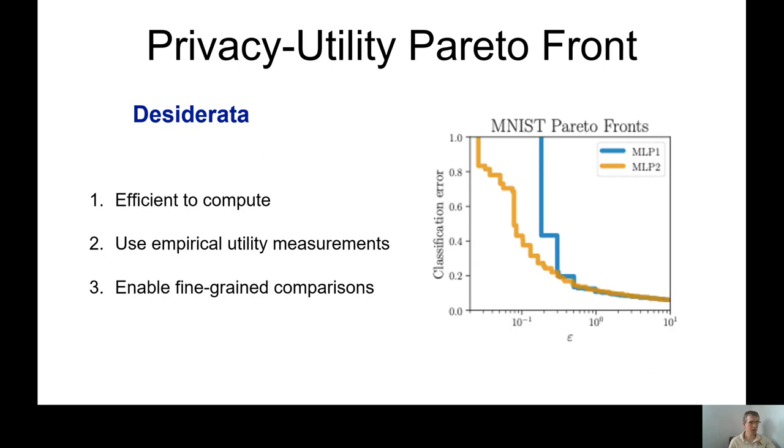Basically, what we want to have is this sort of Pareto front that tells us that for a given algorithm or a given model, what is the best accuracy we can get for a set epsilon. And ideally, if you choose a point on this plot, you can even see what are the hyperparameters that gave you this trade-off.